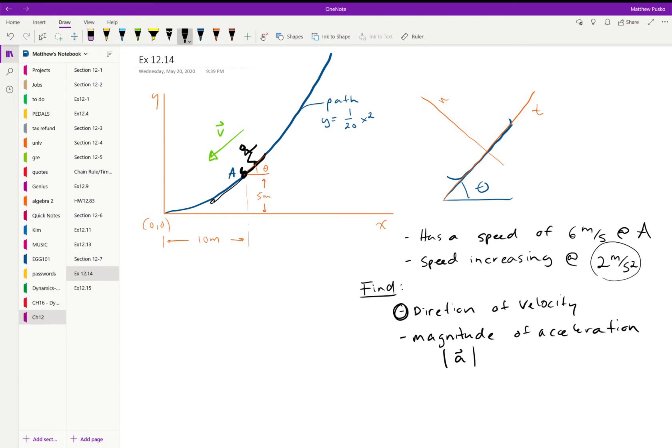He also has a speed increasing of 2 meters per second squared at that instant. We're given the coordinates, we're given the path, it's a parabola. It's at 10 comma 5, those are the x-y coordinates.